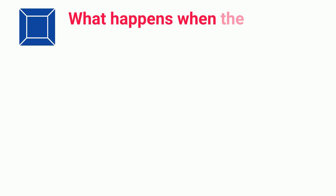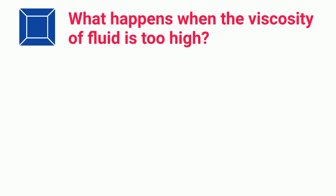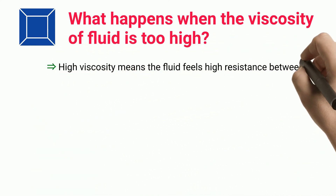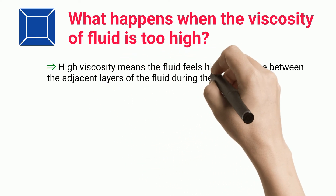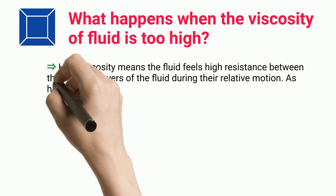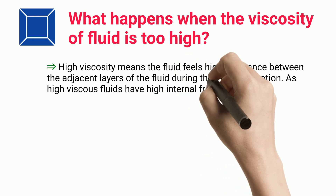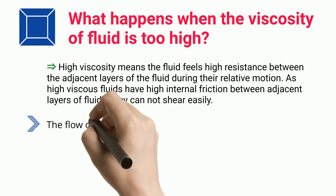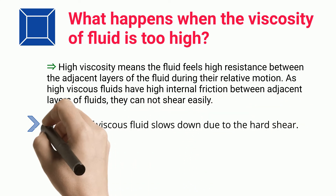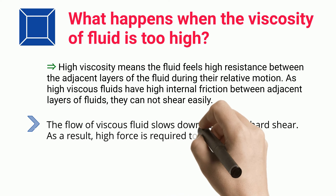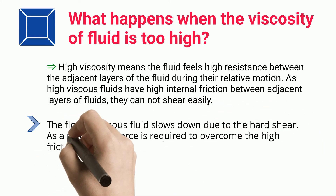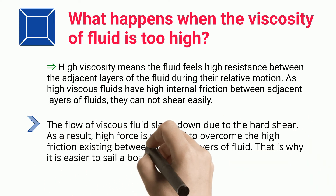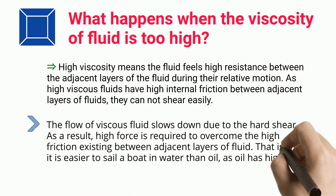When the viscosity of a fluid is too high, the fluid feels high resistance between adjacent layers during their relative motion. As highly viscous fluids have high internal friction, they cannot shear easily, causing the flow to slow down. As a result, high force is required to overcome the friction between adjacent layers. That is why it is easier to sail a boat in water than in oil, as oil has high viscosity.